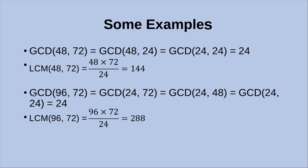As another example, the GCD of 96 and 72 can also be computed recursively using the Euclidean algorithm, and we get 24 as the GCD of the two numbers. The LCM is simply equal to the product of the two numbers divided by the GCD: 96 × 72 ÷ 24 = 288.